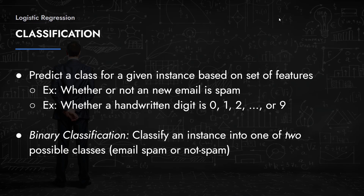It's either spam or it's not — there's no continuous variable, just a binary zero or one, true or false. That's a classic classification example. A more complex classification problem would be predicting whether a handwritten digit corresponds to 0 through 9. You have a total of 10 classes — a multi-class problem where you're predicting more than two possible classes.